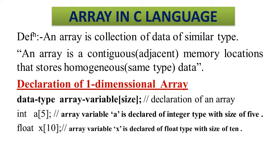Now let's see how we can declare an array. The syntax is: first we have the data type, then the array variable name, then the index or subscript size in brackets, and then a semicolon. So this is the syntax to declare an array.